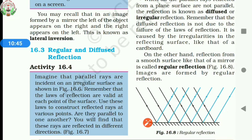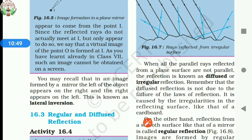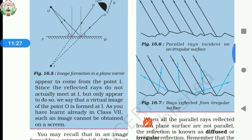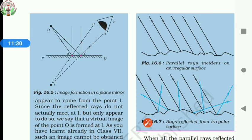On the other hand, when all the parallel rays reflected from a surface are not parallel, the reflection is known as diffused or irregular reflection. It is caused by the irregularities in the reflecting surface, like that of a cardboard. In that case, the reflected rays will not be parallel to each other.